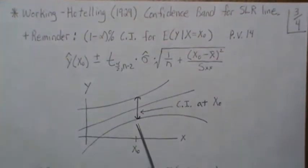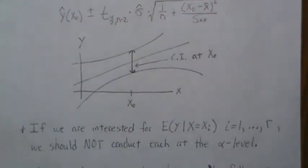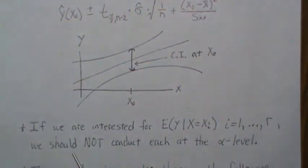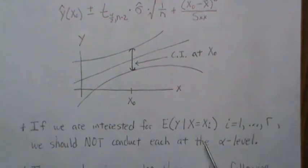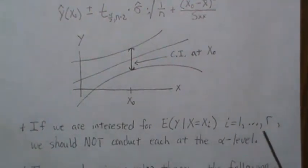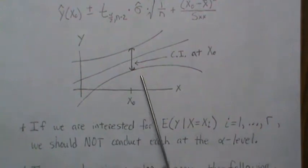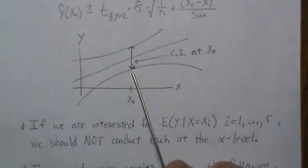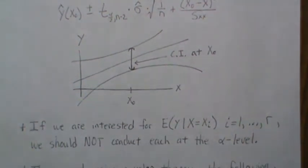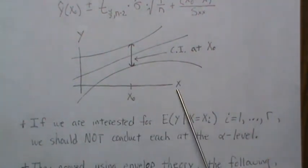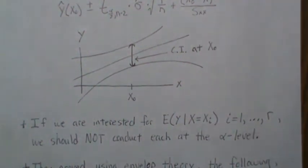But there's no attempt to adjust for multiplicity here. This is protected at the alpha level for one point, that's it. So if we're interested in several points—x₁ through xᵣ—we want the average y for several points. We should not conduct each one at the alpha level; it's just not applicable. The type one error rate is so high for the experiment-wise error rate that you're not protected. But if we're only interested in two or three, a Bonferroni approach would be very applicable. But what if you're interested in the whole range of x? Pick any x. Then Bonferroni adjustment is not going to work.